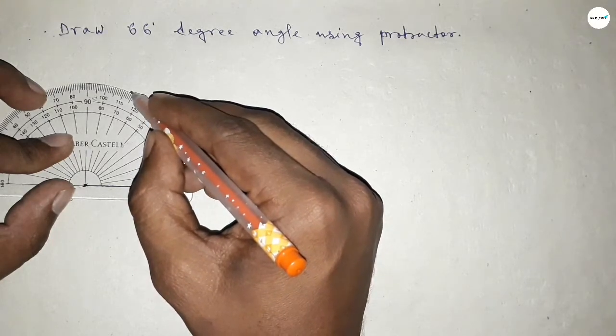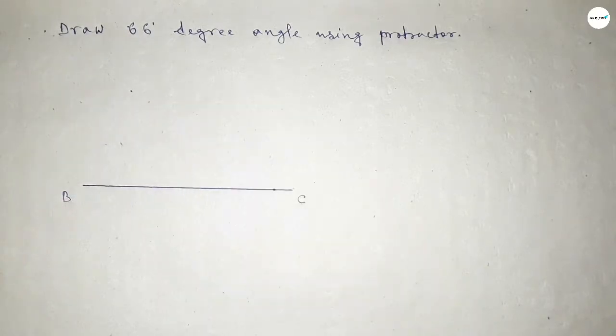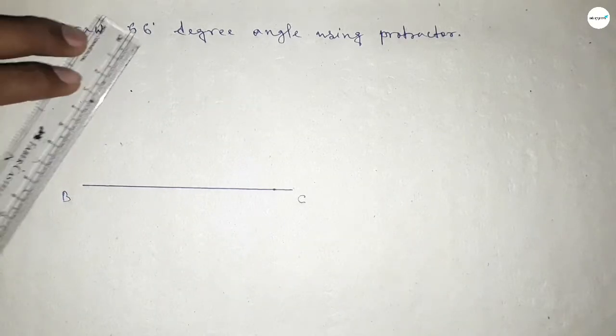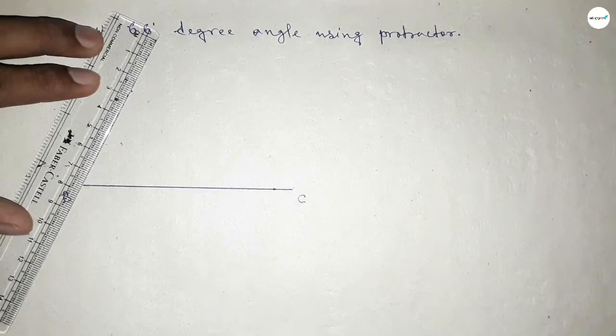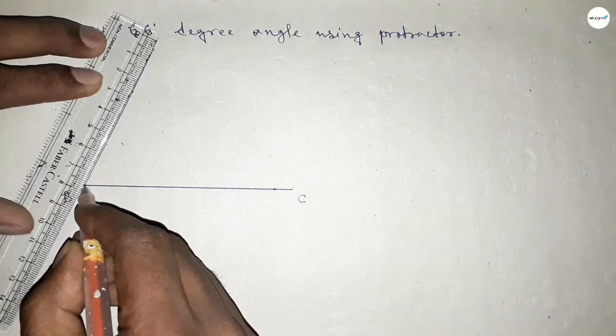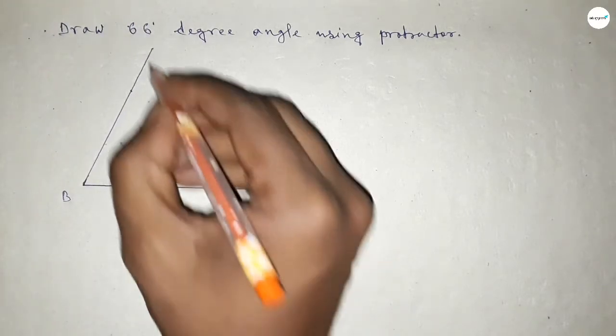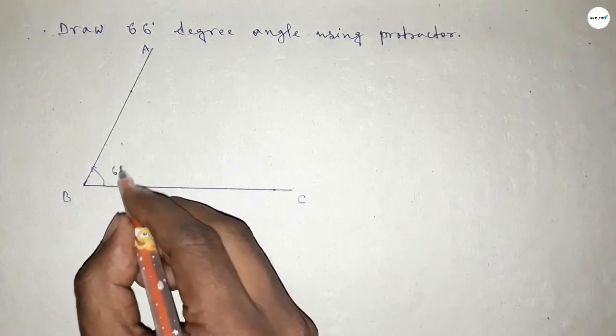Now joining this side to get 66-degree angle. So now joining this and taking here a point. So angle ABC up to this, this is 66 degrees. So therefore angle ABC.